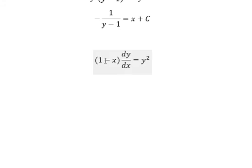dx and (1 minus x) we put on the right, so we will have dy over y squared equals dx over (1 minus x).